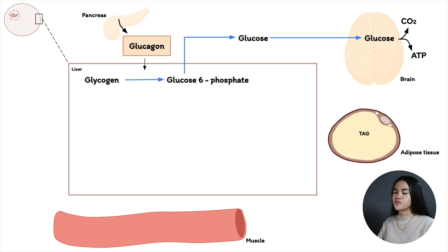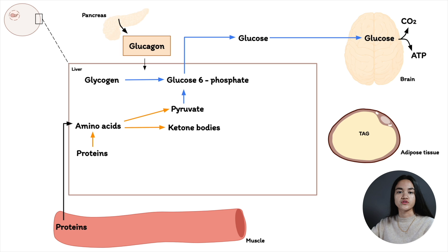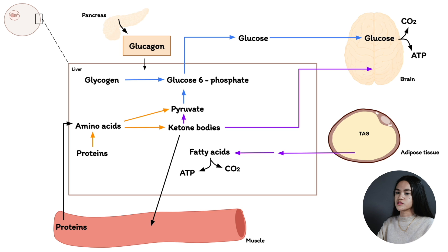Proteins in liver and muscle are broken down to amino acids, which can be converted to pyruvate and ketone bodies. Pyruvate is diverted to gluconeogenesis to regenerate glucose. Ketone bodies are produced when glucose levels drop and become an alternate energy source, especially for the brain, since fatty acids can't cross the blood-brain barrier. Triacylglycerols are broken down to mobilize fatty acids for fuel, and excess acetyl-CoA is shunted to ketone body production. Glycerol can also be used for gluconeogenesis.